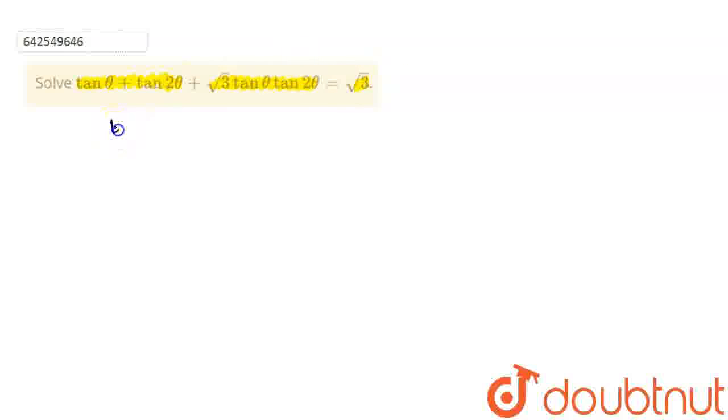So now we have tan theta plus tan 2 theta plus under root 3 of tan theta tan 2 theta is equal to root 3. This is the given equation to us. So if I transpose root 3 tan theta tan 2 theta onto the RHS,